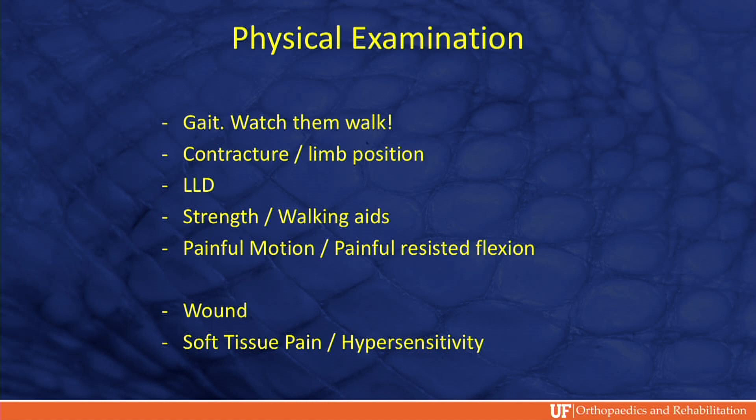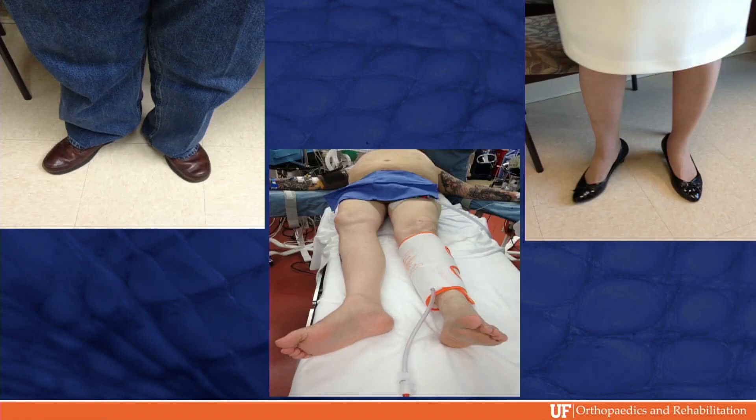When you see them in clinic, get up and have them walk. You'd be surprised how much you can pick up from limb position, gait, limb discrepancy, and walking aids. Oftentimes you can provoke the symptoms, especially with mechanical problems. Be careful to look at the wound and neuropathic-type symptoms. These are three patients where you can see their legs are turned out from a retroverted, subsided stem — classic findings if you look for them.